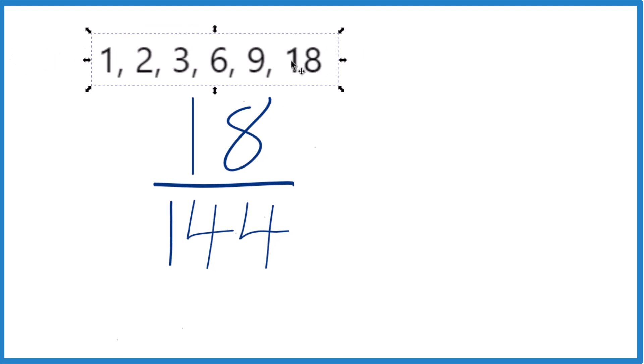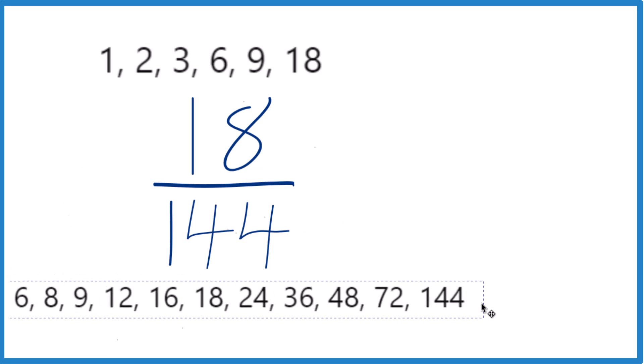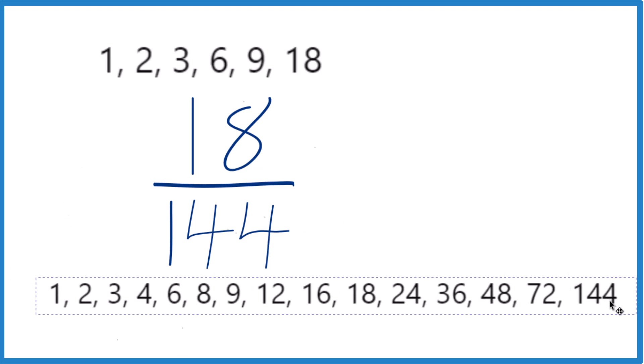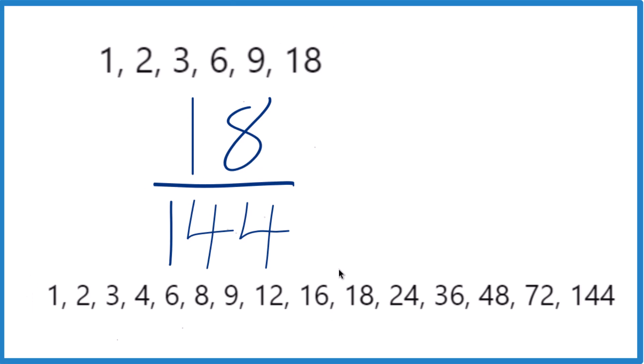So here are the factors for 18: 1 times 18, 2 times 9, 3 times 6. For 144, there are a lot of factors here. So let's see if we can find the greatest common factor between 18 and 144.